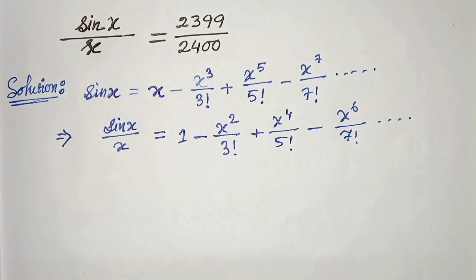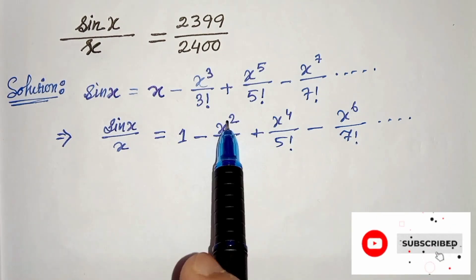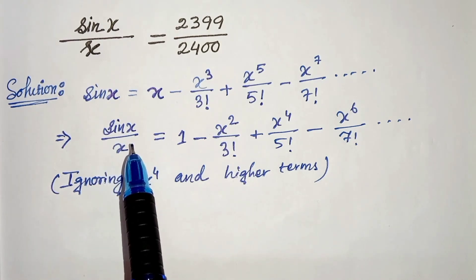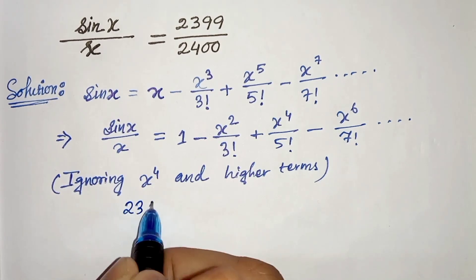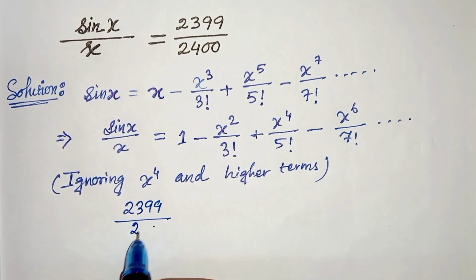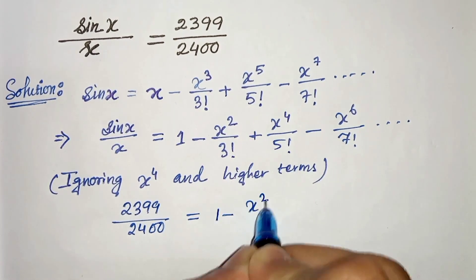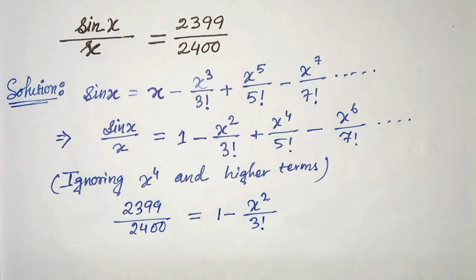Now for our convenience, we will ignore these higher terms. We will keep up to power 2. So ignoring x to the power 4 and higher terms, we will get sin x by x can be replaced by this. So we will get 2399 divided by 2400 equals 1 minus x squared over 3 factorial. We have ignored the x to the power 4 and higher terms.